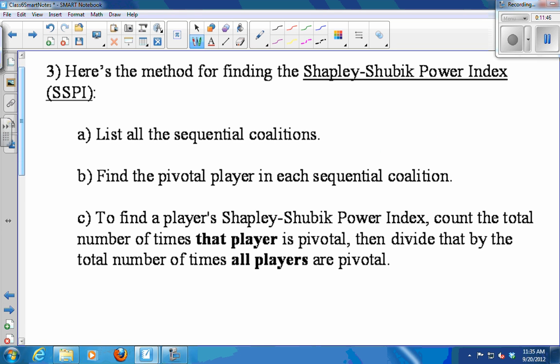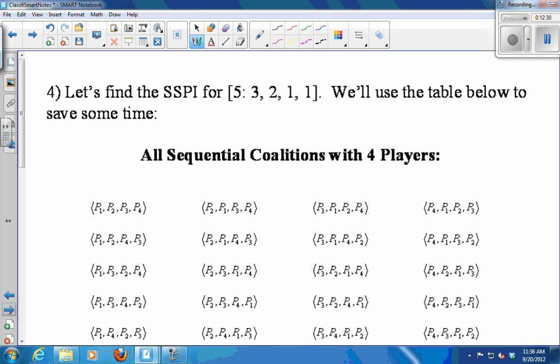Okay, so here's the method for finding the Shapley-Shubick power index. First, you have to write down all the sequential coalitions. So this is easy for up to three players. For four players, there are 24. In that case, I'll always write them out for you. Okay. But first, you have to write them all down. You have to write down every sequential coalition. Then, you have to find the pivotal player in each sequential coalition. And then, to calculate the Shapley-Shubick power index, you count the number of times that each player is pivotal and divide by the total number of times that all players are pivotal. Okay, we'll do an example. It'll be clear.